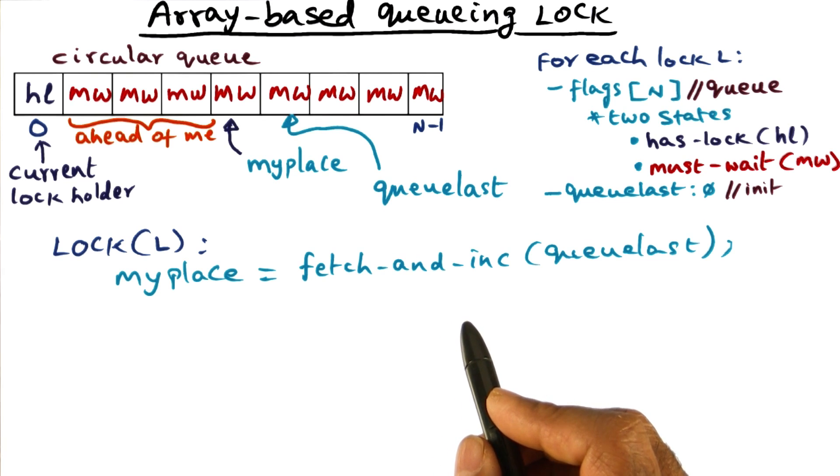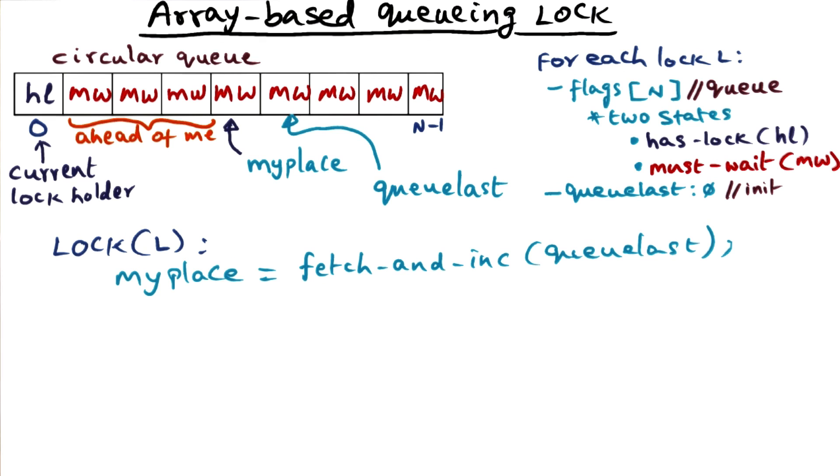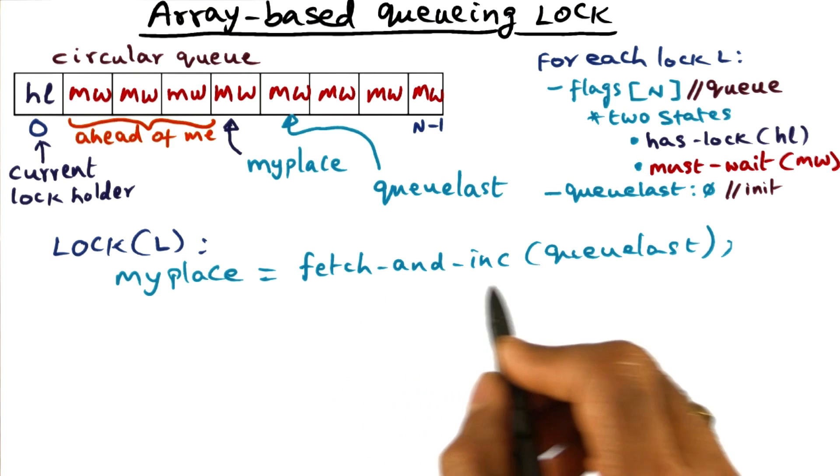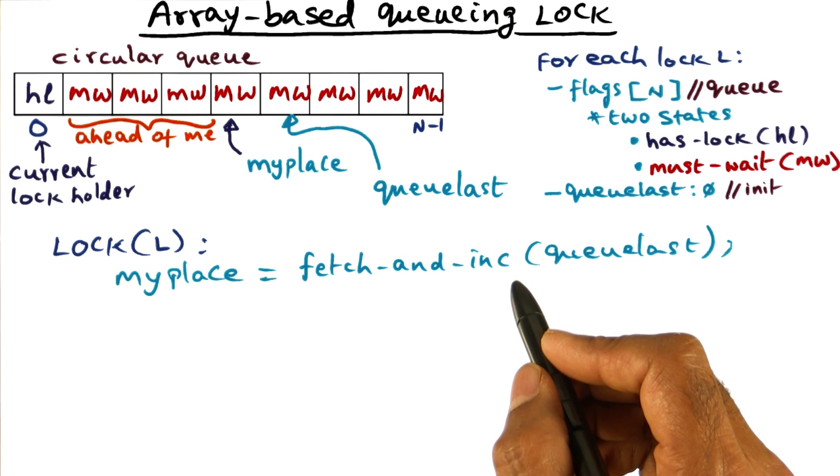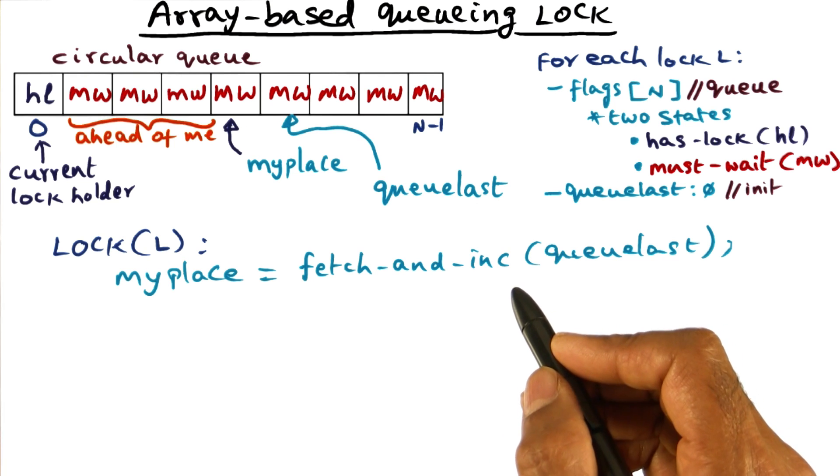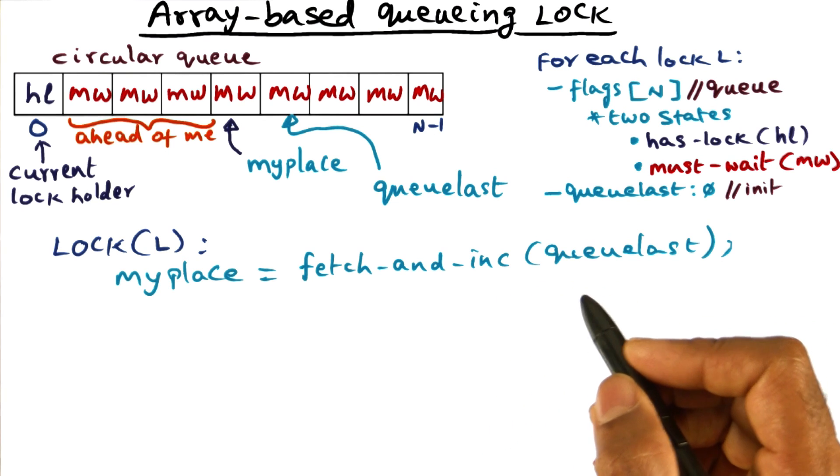And so there is no issue of any race condition in that sense. So I will get my spot and I'll increment queue last. And of course, if the architecture does not support this fancy fetch an increment read, modify, write operation, then you have to simulate that operation using test and increment instructions.